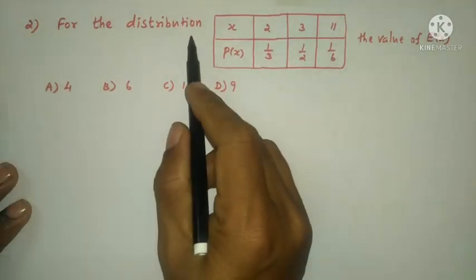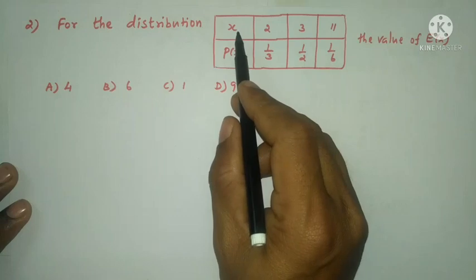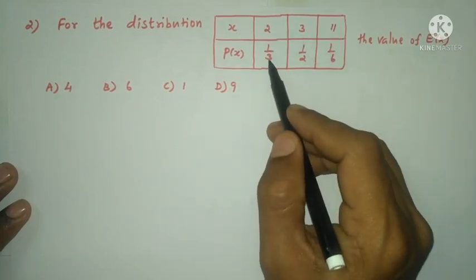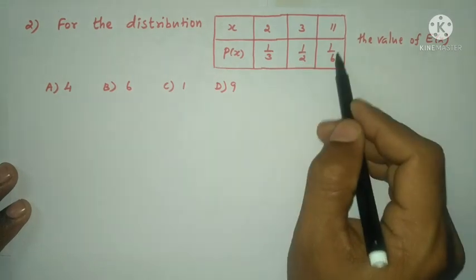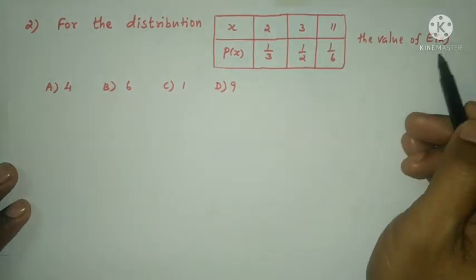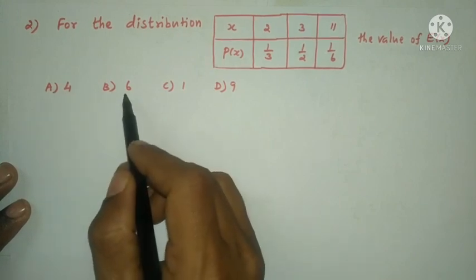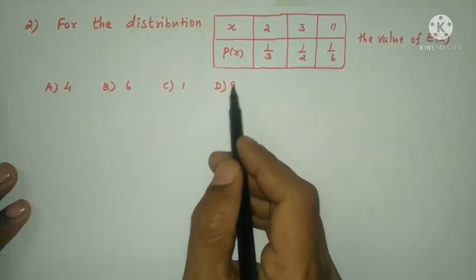Next question: For the distribution, x takes values 2, 3, 11, with corresponding probabilities 1 by 3, 1 by 2, and 1 by 6. The value of E of x. Option A 4, option B 6, option C 1, option D is 9.